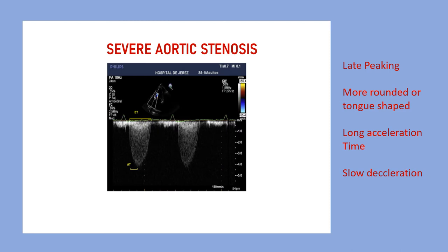In severe aortic stenosis, the signal shows late peak velocity, with a much larger acceleration time compared to mild aortic stenosis. The shape of the signal is tongue-like with a rounded apex, and combined with slow deceleration, this gives a more rounded and tongue-shaped appearance to the aortic valve continuous wave Doppler signal.